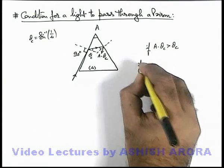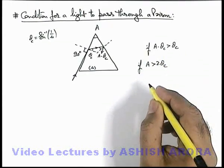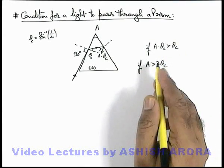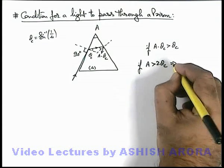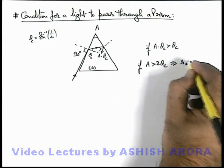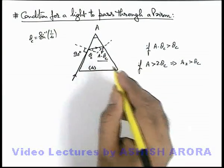So here we can write, if A is more than 2 theta c, then this implies the value of r2 will be greater than theta c. r2 is this angle which we are taking as A minus theta c.